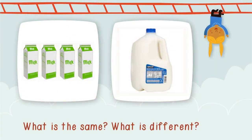Take a look at the two images shown on your screen. Take a moment and reflect — what do you notice that's the same, and what do you notice that's different? I see that both images show milk. The containers in both images are white containers — I'm guessing that means it's regular milk. I see that the first image has four containers, whereas the second is just one. This makes me wonder, which of these images has more milk? The first image shows four quarts. The second one shows one gallon. Did you already know that?